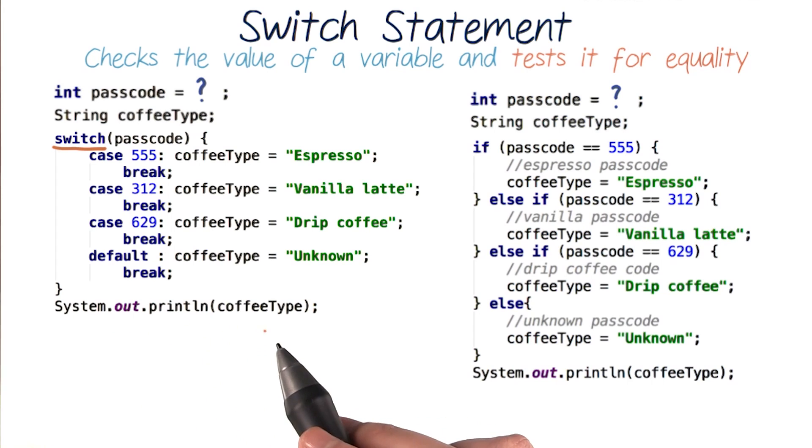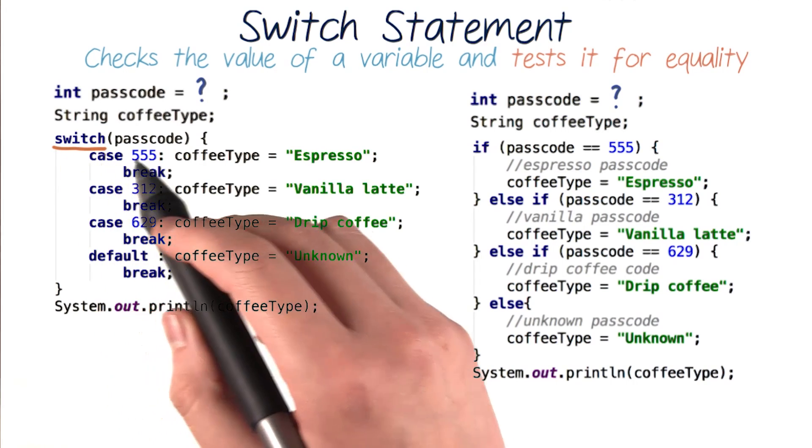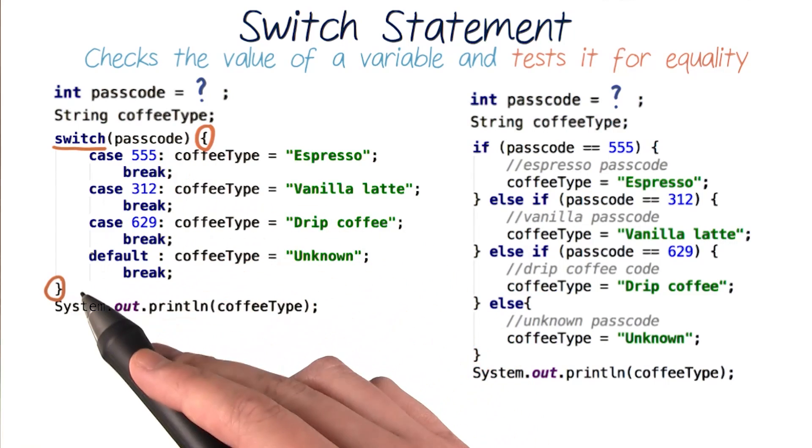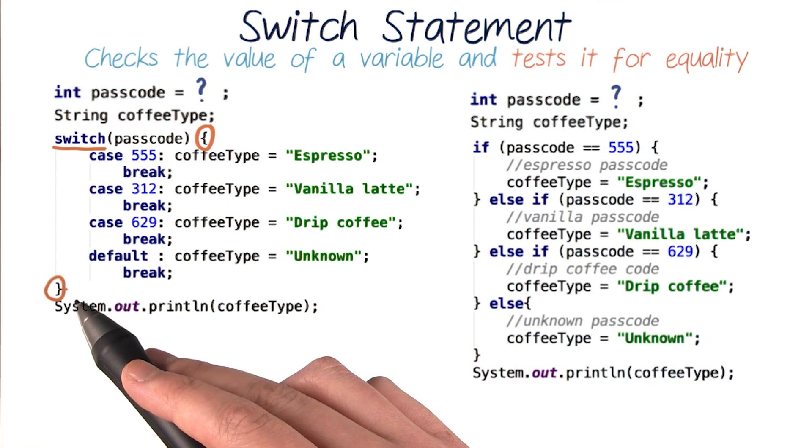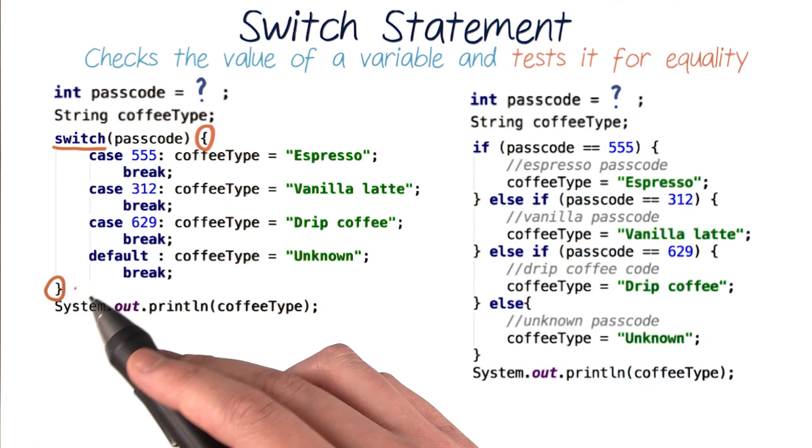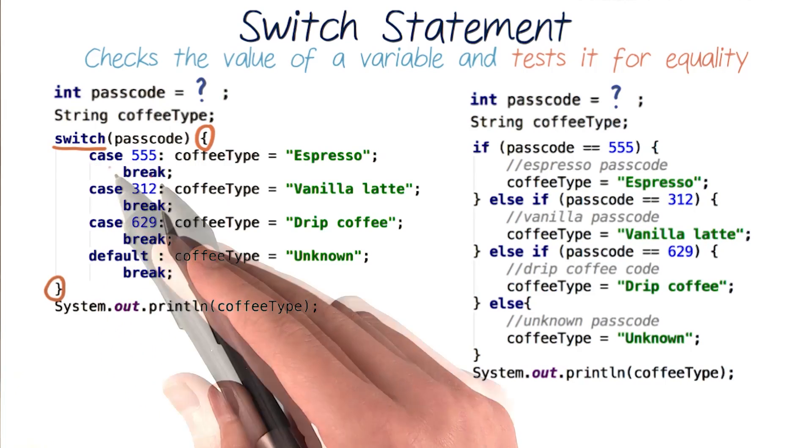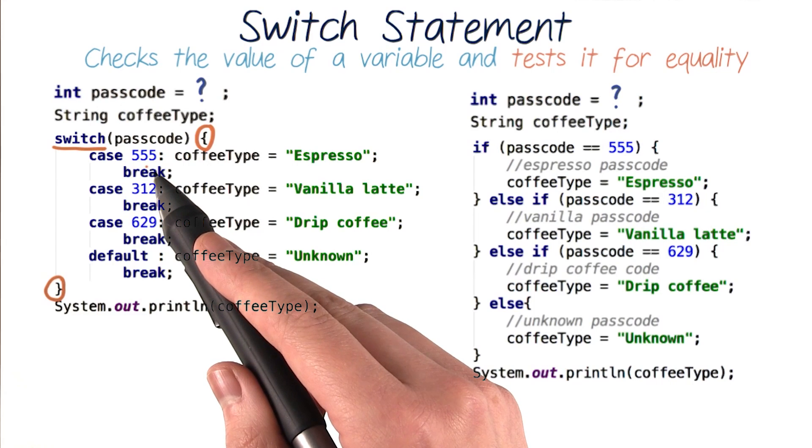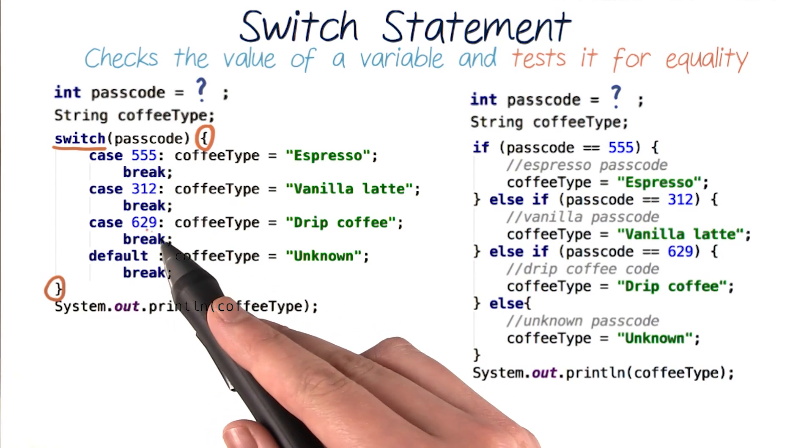In Java, this switch statement looks like this. It says switch, followed by the variable it wants to check for equality, surrounded by parentheses. Then it has curly braces that will contain all of our equality checks. And our equality checks are just these specific cases, which here are the specific three-digit passcodes that our program knows: 555, 312, and 629.